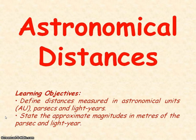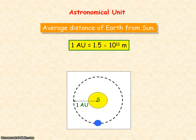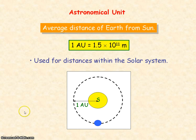We're going to be looking at astronomical distances. The first distance is called the astronomical unit, and this represents the average distance Earth is from the Sun. So one astronomical unit is equal to 1.5 times 10 to the 11 meters. This unit is mainly used when we're looking at distances within the solar system.